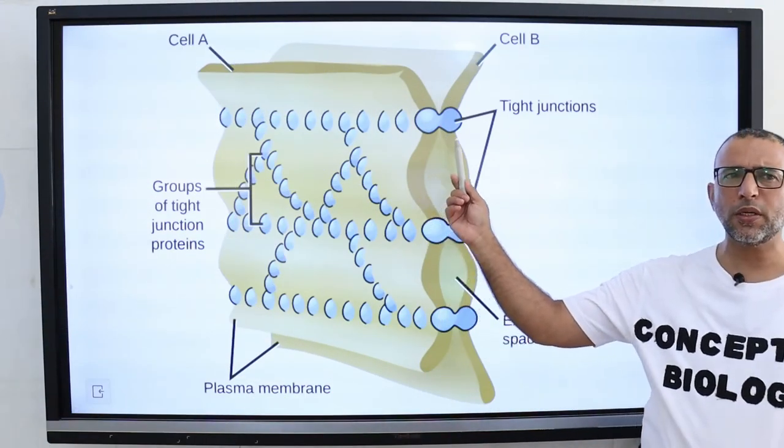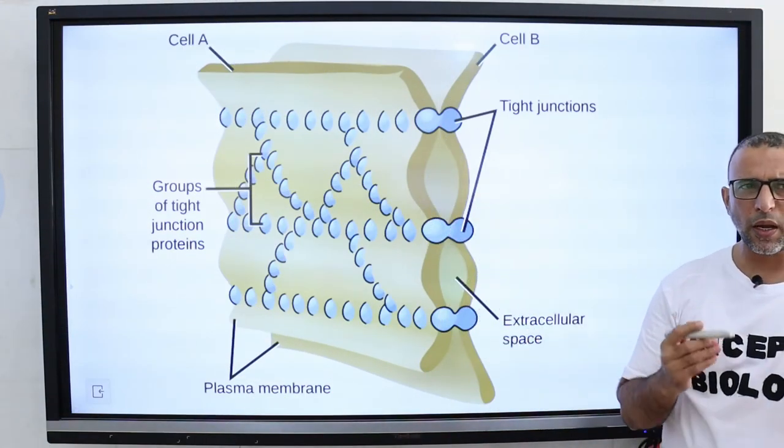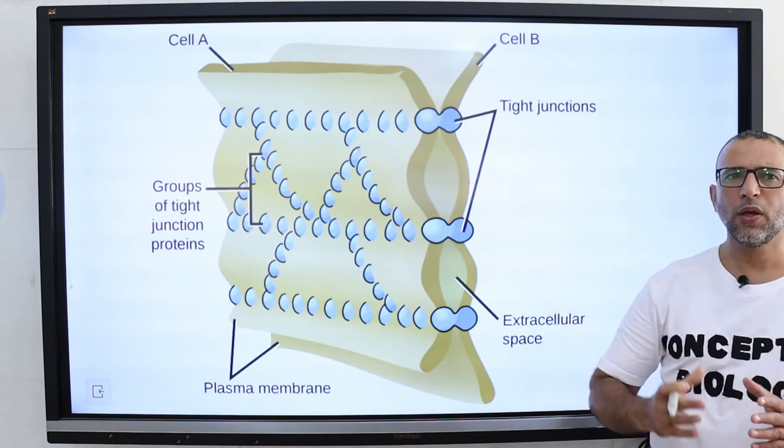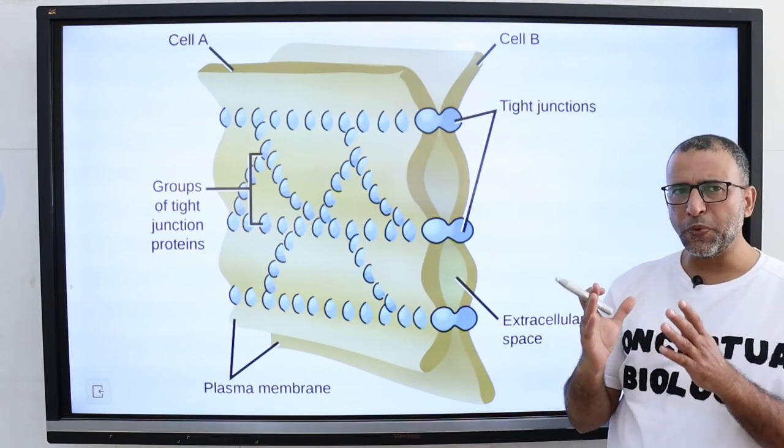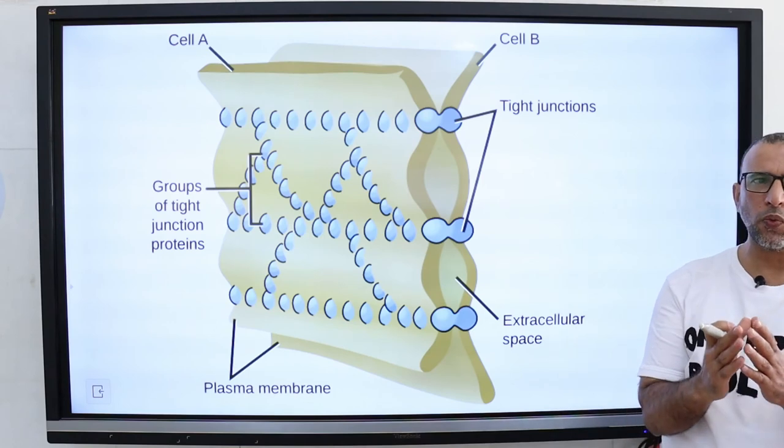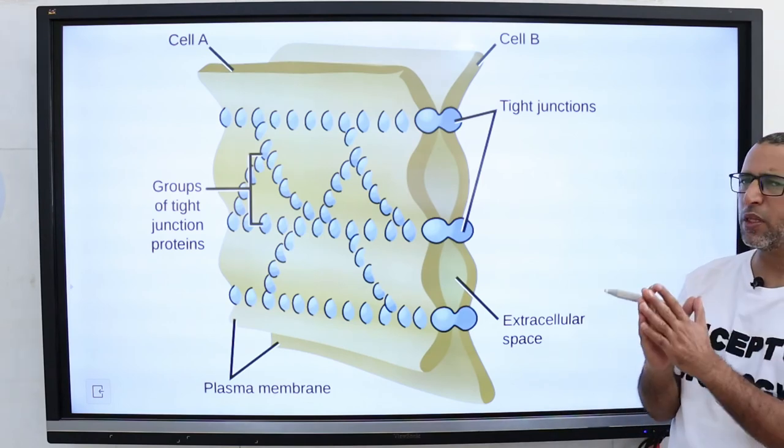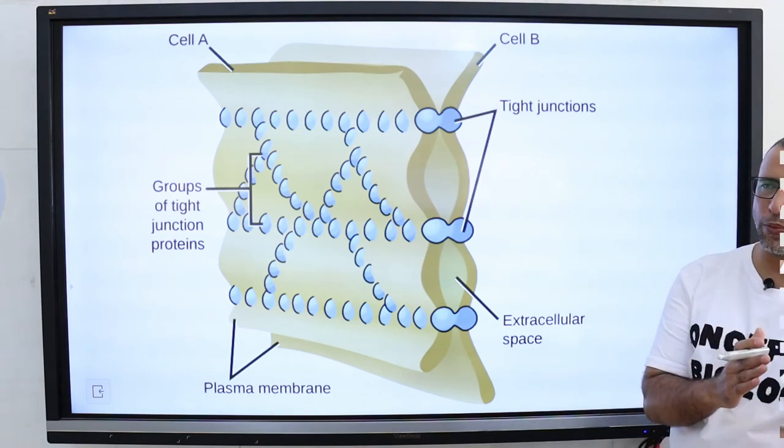Tight junctions are also present between the cells that line capillaries in the brain. They form the blood-brain barrier, which prevents many substances in the blood from passing into the brain.